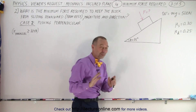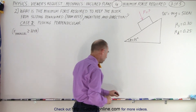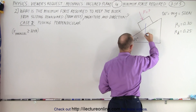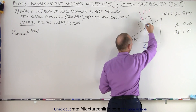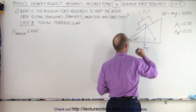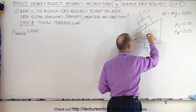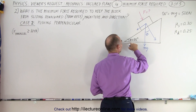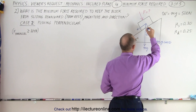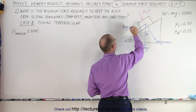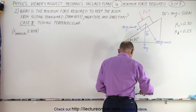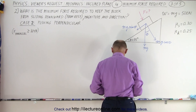Before we start with the equation, we need some vectors, so let's draw the known vectors. We have the weight pushing down, which is mg, which creates two components: a component perpendicular to the incline and a component parallel to the incline. If this angle theta is the same as this angle right there, then this becomes mg times the cosine of theta, and this becomes mg times the sine of theta. This then creates a normal force in this direction.